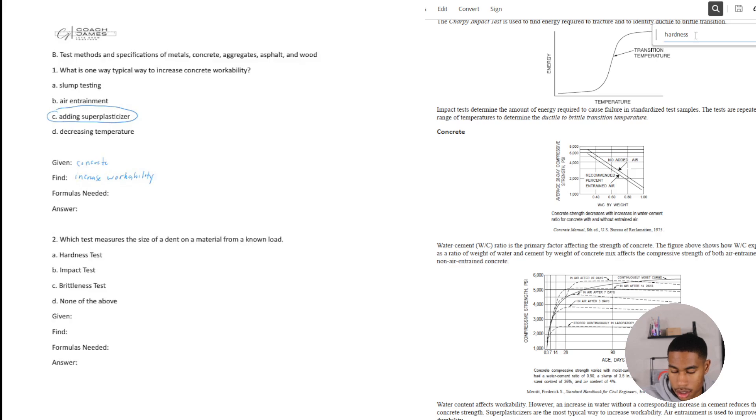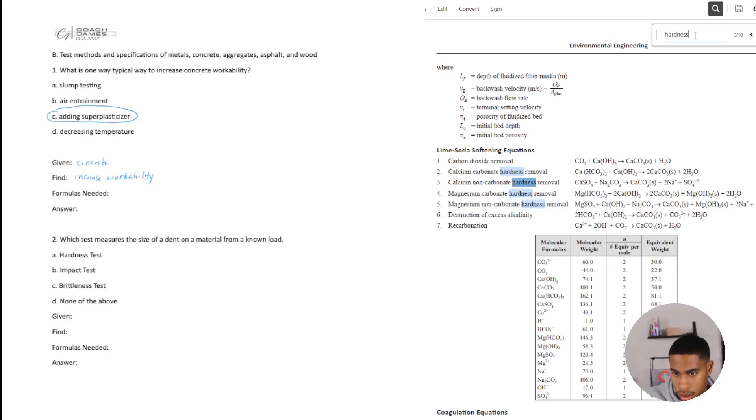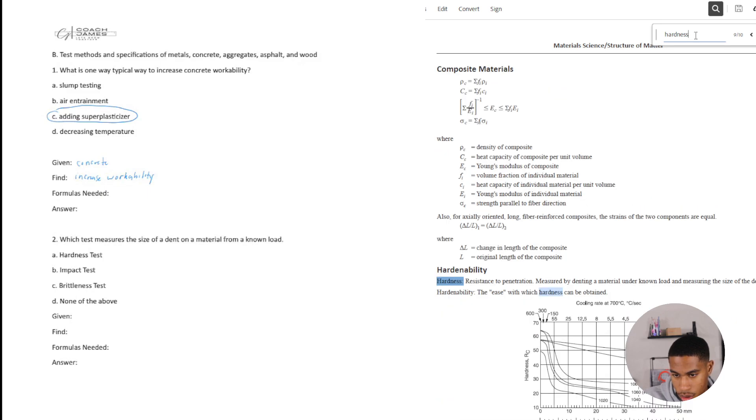Is there a hardness test? Hardness. Let's go through. 10 options. And you want to test measures the size of a dent on a material from a known load. Hardness, hardness. Hardness. Measured by, okay, hardness. Hardenability. Resistance to penetration. Measured by denting a material under known load and measuring the size of the dent. All right, hardness test it is.